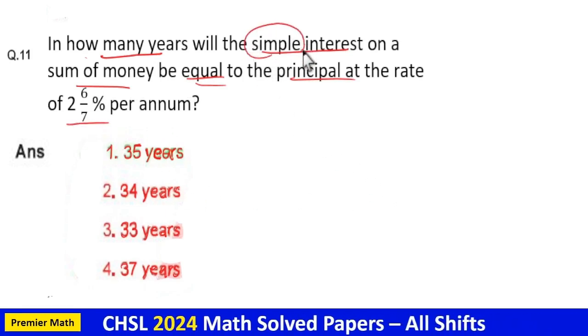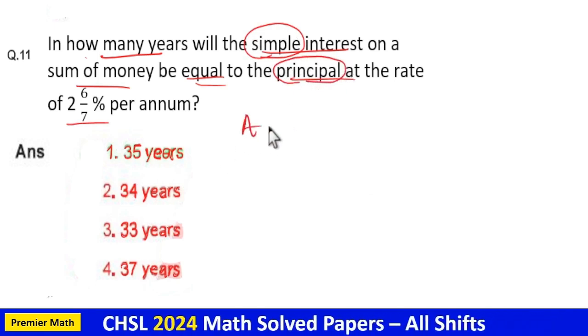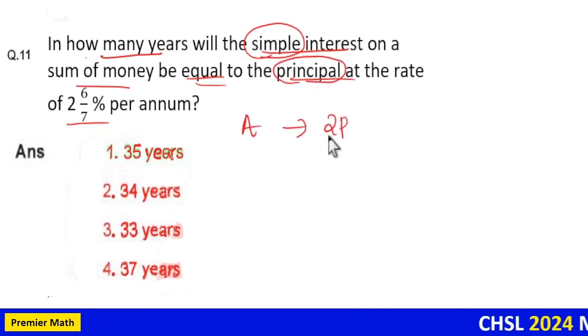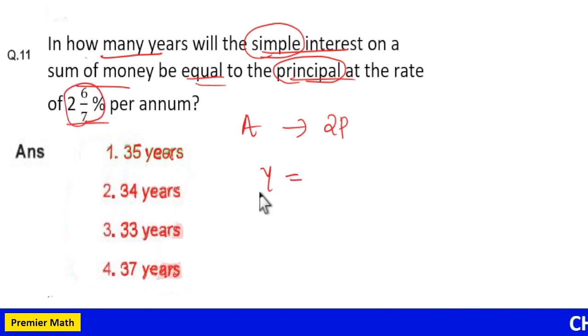Here we need to find out in how many years simple interest become principal. That is amount become 2 times the principal in y years at the rate of 2 into 6 by 7 percentage.